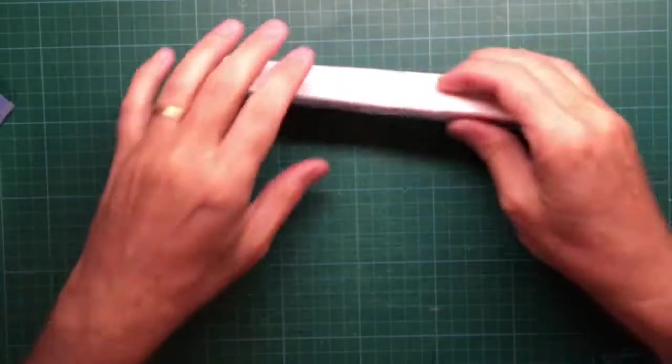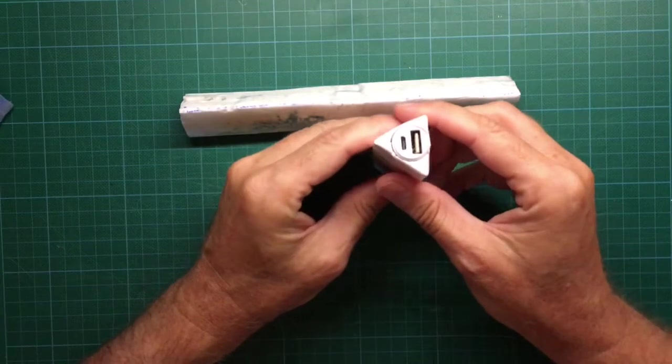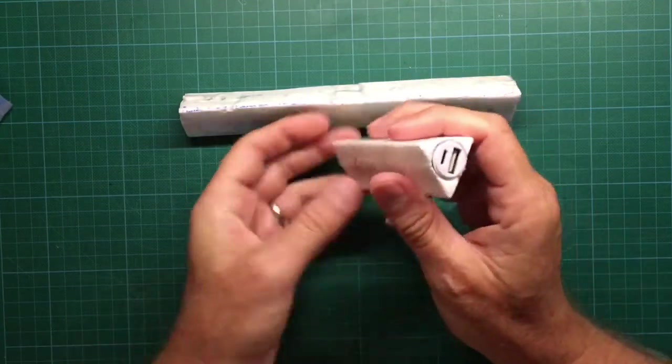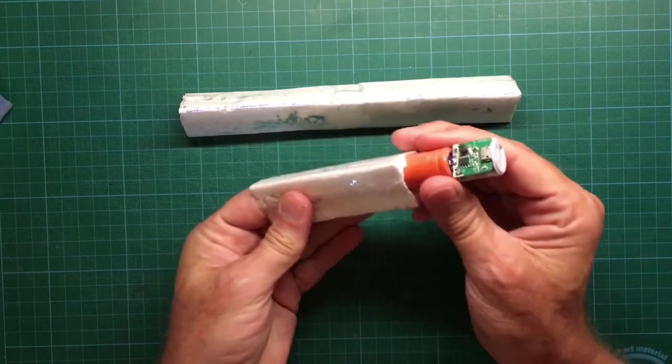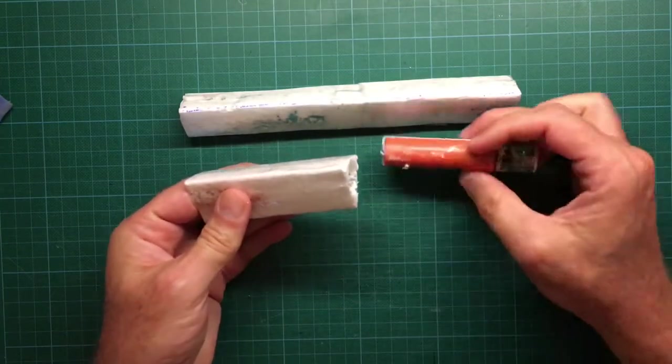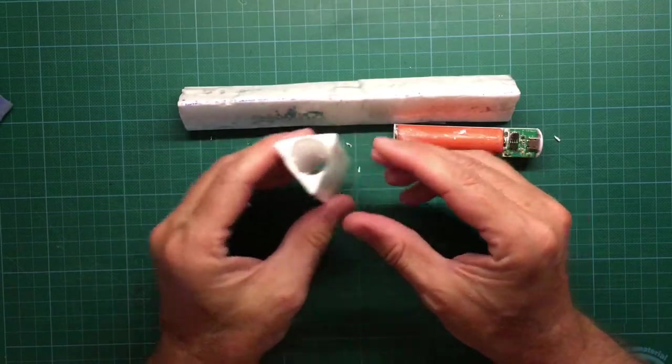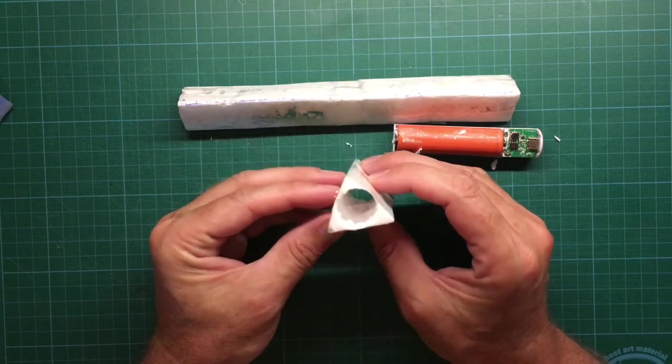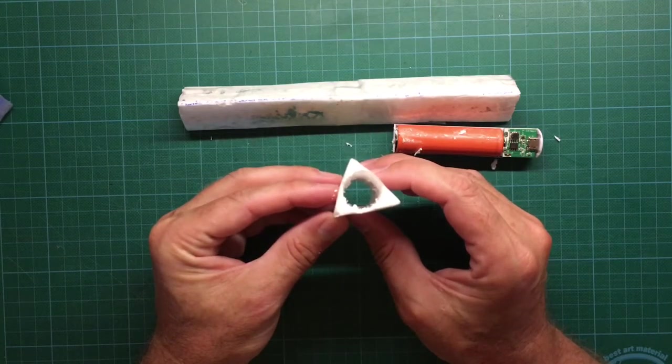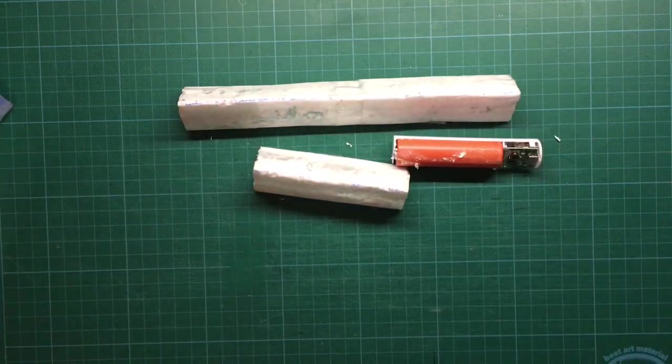If you take the power bank apart, you see that the commercially available power bank is just included in a triangular shaped styrofoam fitting. And now you may ask yourself how this nice looking hole was made into the styrofoam, and that's a trick I'm going to show you during this video.